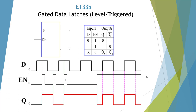Here we have a gated data latch, or what I call a level-triggered device. We're looking for enables — whenever the enable is high we will look at the data. As long as the data doesn't change within the enable period, it will remain latched. Here we have a high and it latches, stays high. Then we look at the data and it's a low — we go low and stay low until we enable it again. Then we enable, we've got a high, and it latches high.